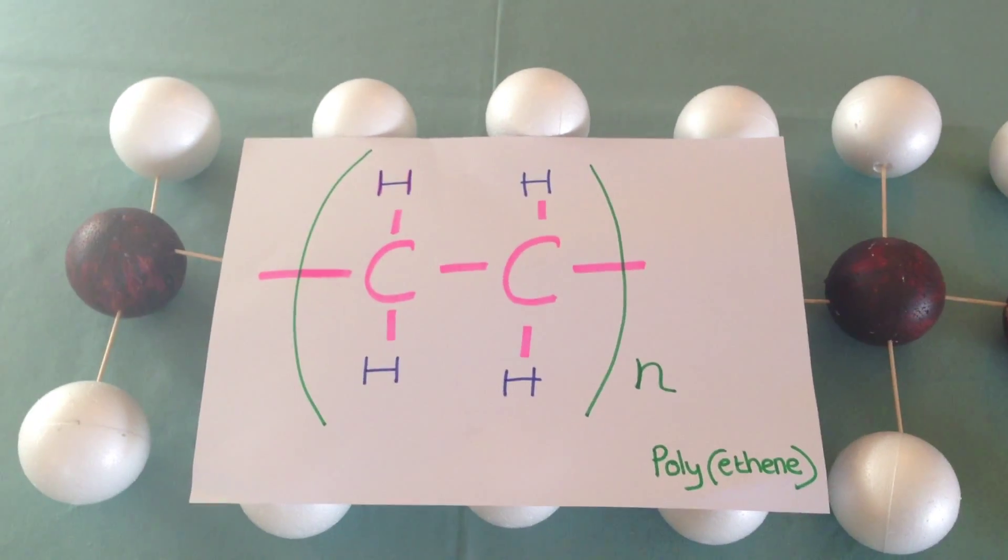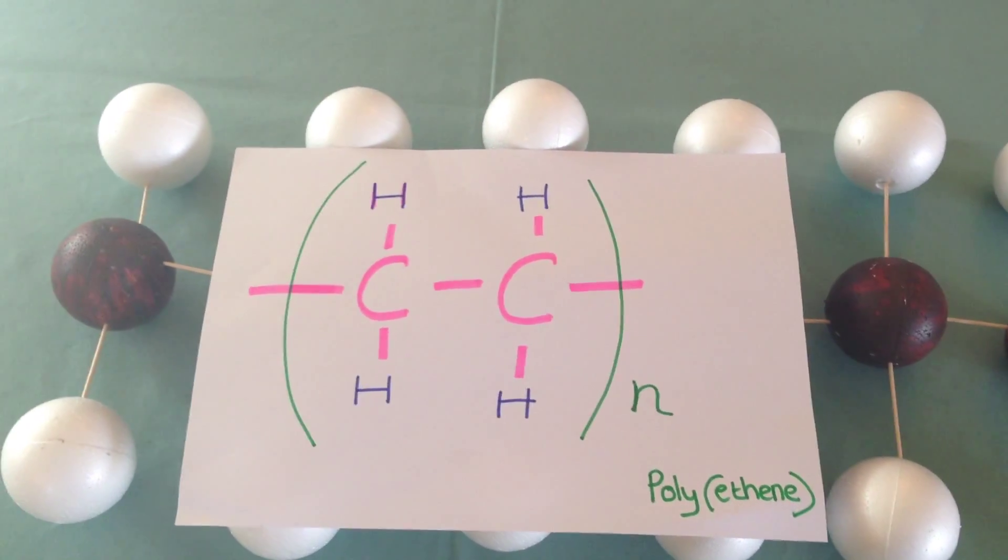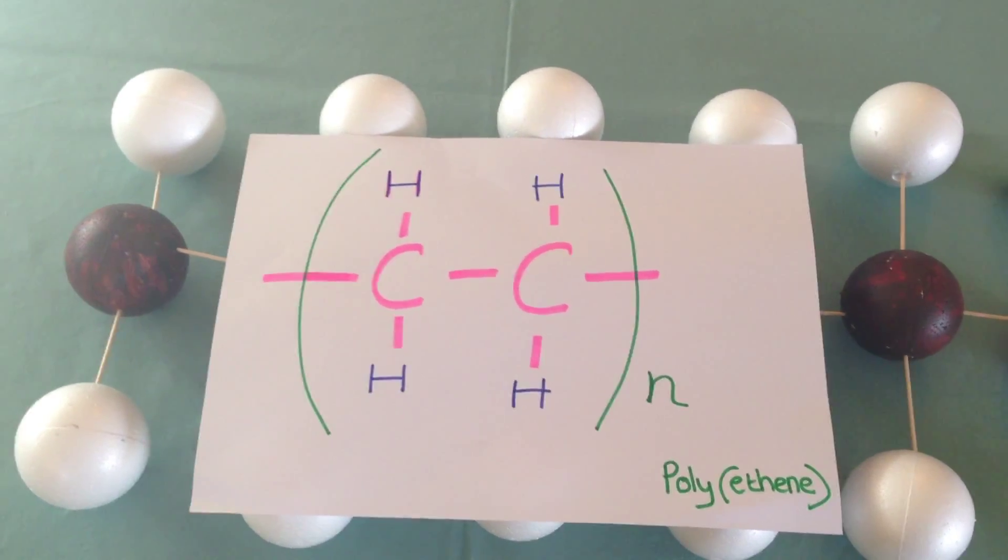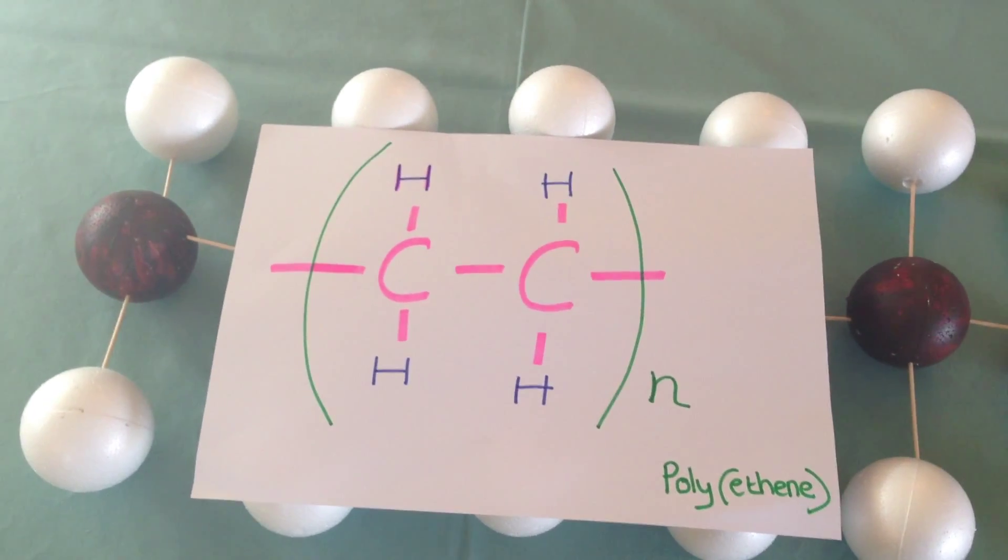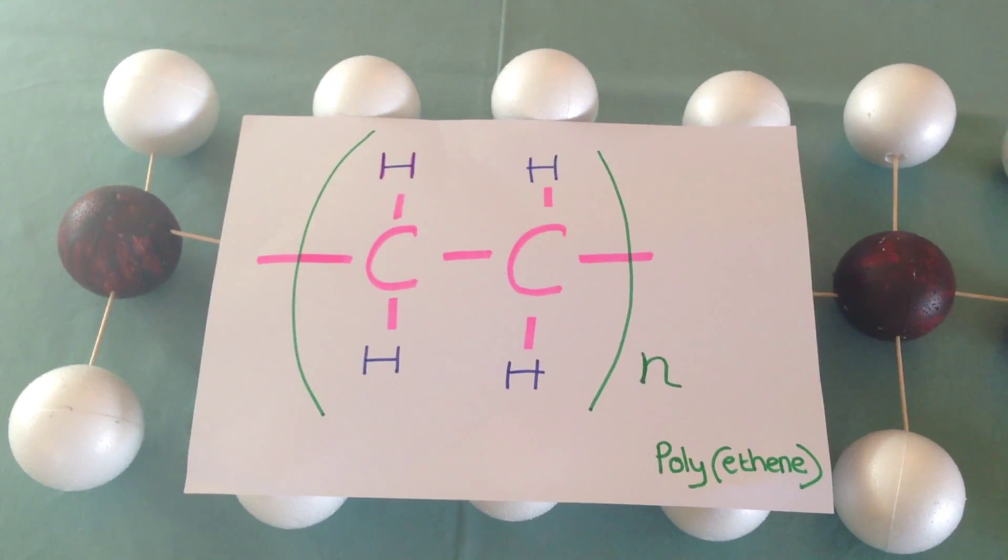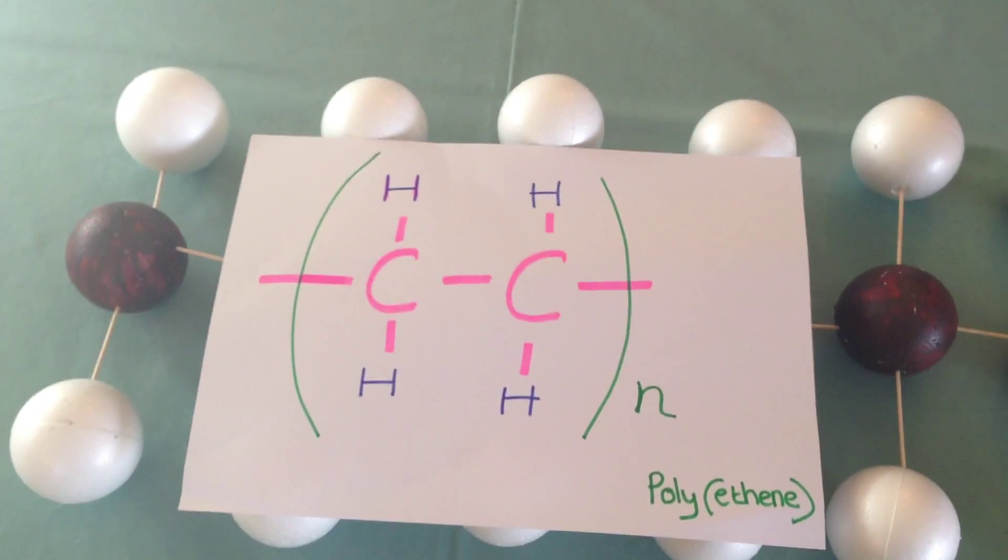The N means that the polymer contains a very large number of the repeating units shown in the brackets. In today's world, polyethene or polythene is used to make plastic bags.